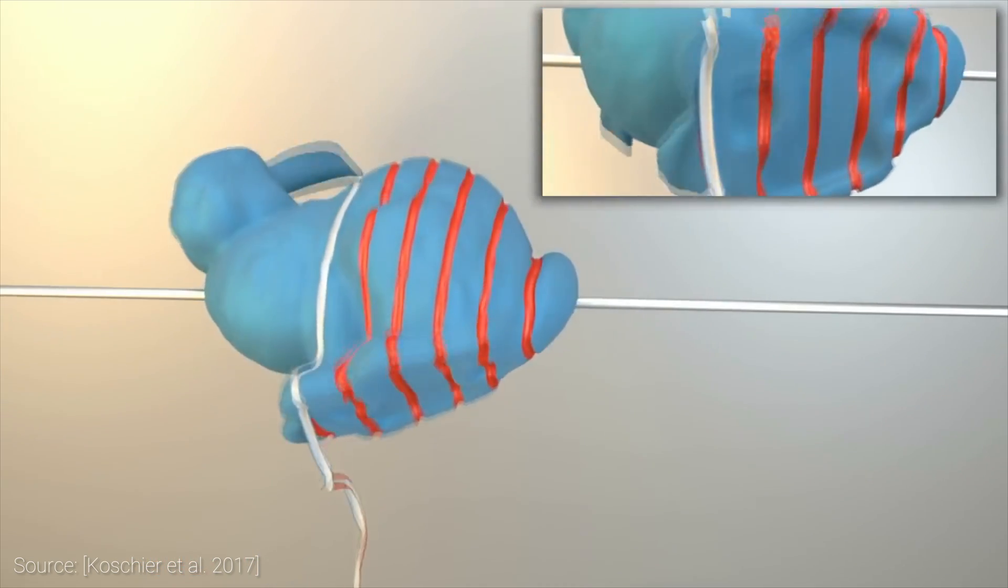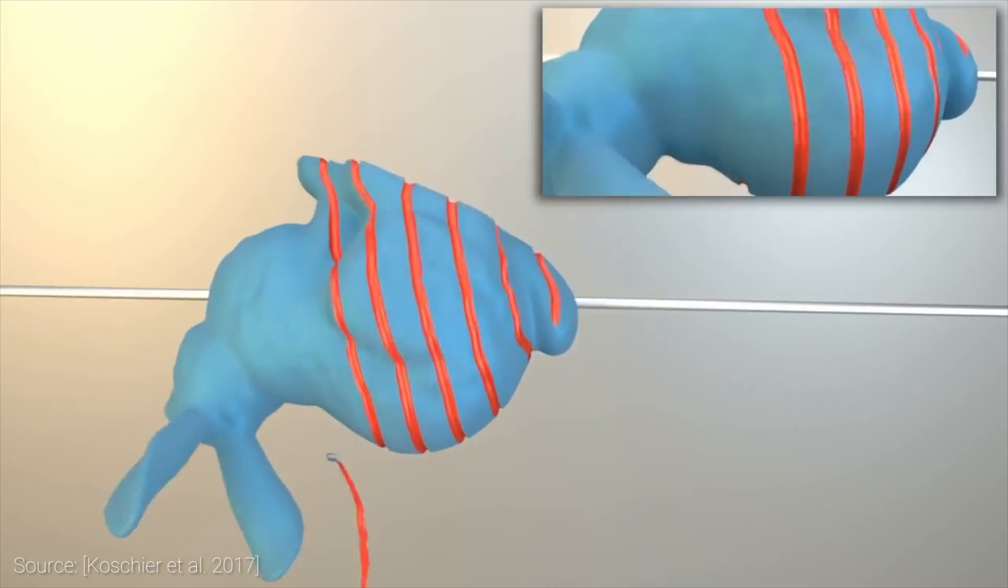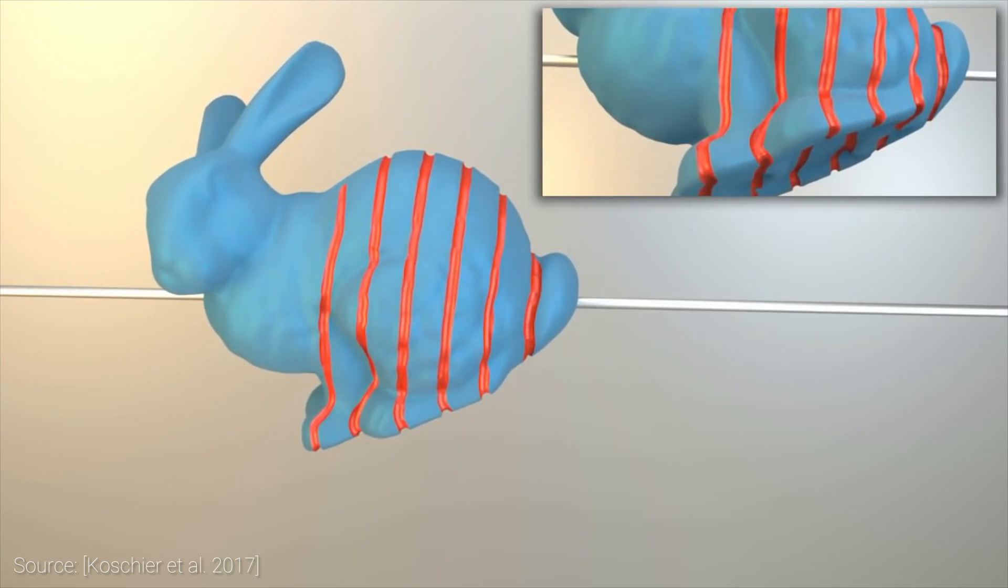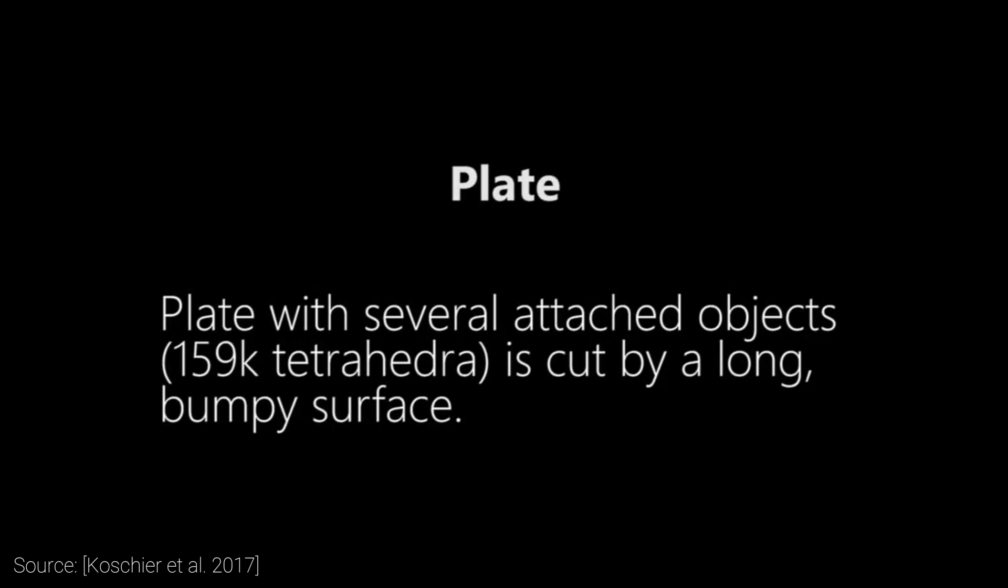When such a cut happens, traditional techniques typically delete and duplicate parts of the geometry close to the cut. This is a heavily simplified solution that leads to inaccurate results.